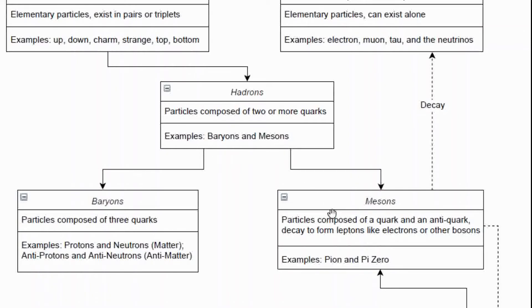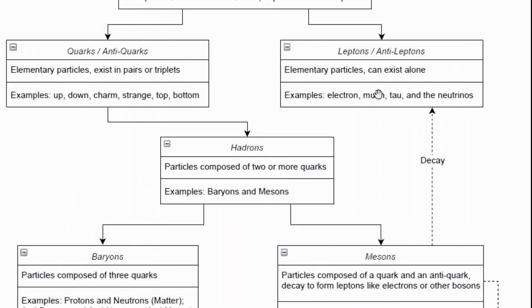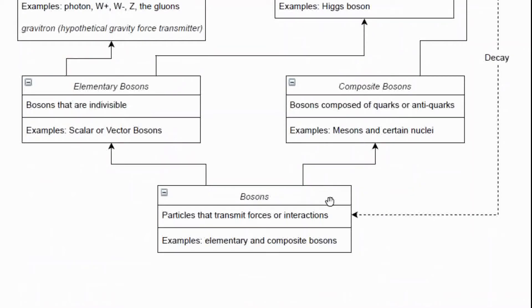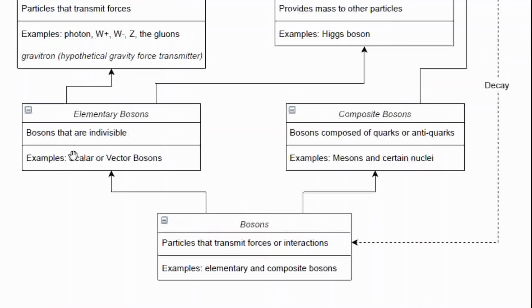The other type of hadron is a meson. Mesons consist of two quarks, but it's always a quark and an antiquark. Mesons don't exist for very long — they decay quite rapidly. When they decay, they become either leptons or antileptons, or they become other bosons, which can be either composite bosons or elementary bosons like the photon.